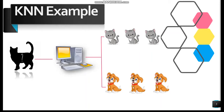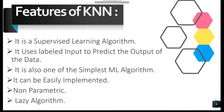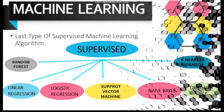The KNN algorithm classifies data based on how similar it is to neighboring data. Key features of KNN include: it is a supervised classification algorithm that uses labeled input to predict output. It is one of the simplest machine learning algorithms and can be easily implemented. It is also non-parametric, meaning it does not make any assumptions. Additionally, it is a lazy algorithm, meaning it memorizes the training set instead of learning discrimination functions from the training data.